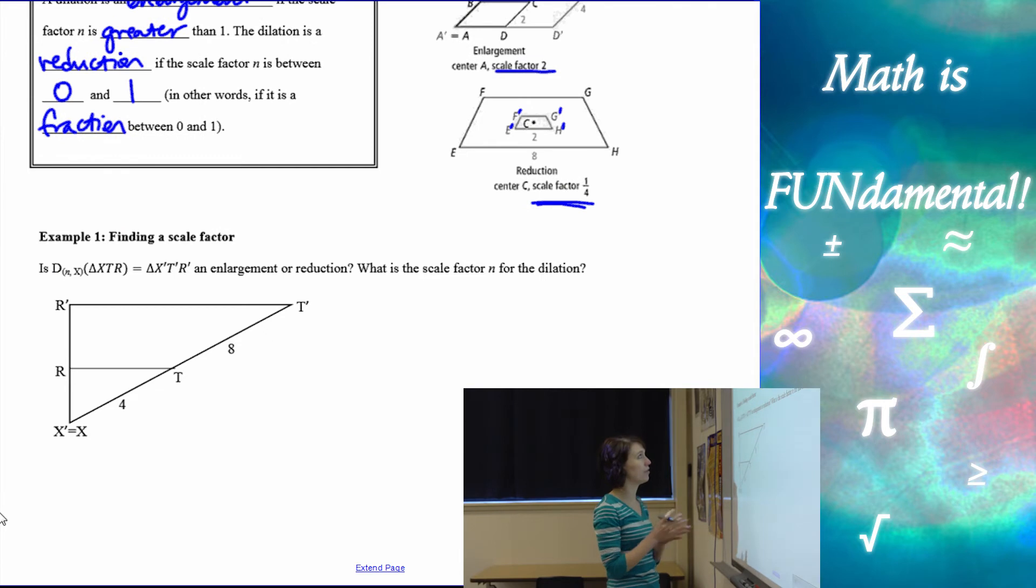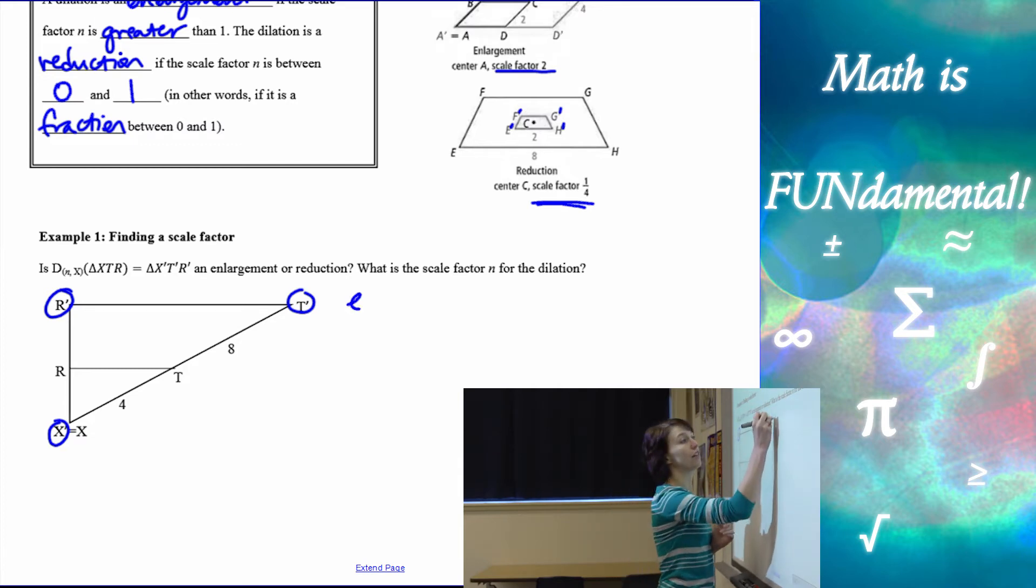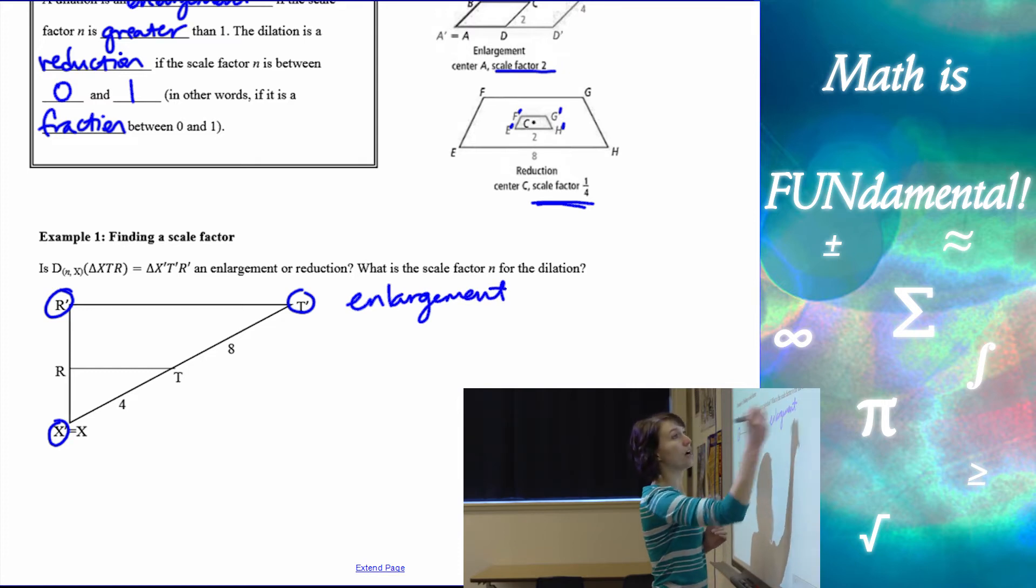Let's look at our example. So is this an enlargement or a reduction? First thing you want to do is look at your points. Here are your image points, which means if I started with these three, X, R, and T, and then I ended with X prime, R prime, T prime, it's definitely an enlargement because it got bigger.